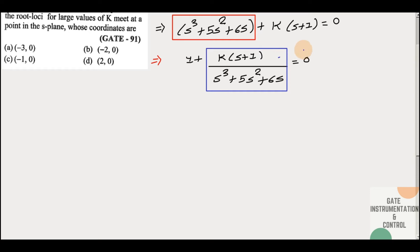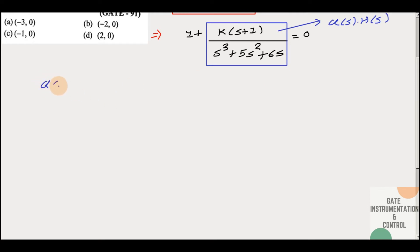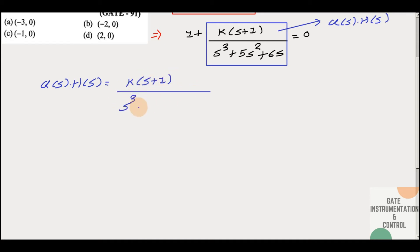This term is our open-loop transfer function. So, the open-loop transfer function G(s)H(s) = k·(s + 1) / (s³ + 5s² + 6s).